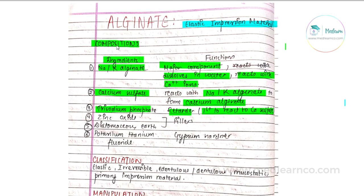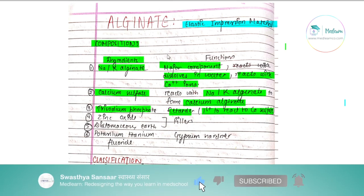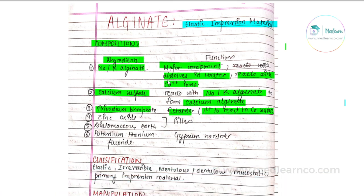The composition of alginate includes: sodium/potassium alginate, whose function is that it dissolves in water and reacts with calcium ions — this is the major component. Calcium sulfate reacts with sodium/potassium alginate to form calcium alginate. Trisodium phosphate acts as the retarder and is the first to react with calcium sulfate. Zinc oxide and diatomaceous earth are the fillers. Finally, potassium titanium fluoride acts as the gypsum hardener.